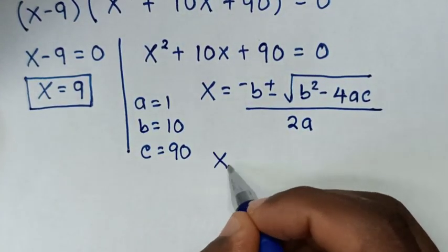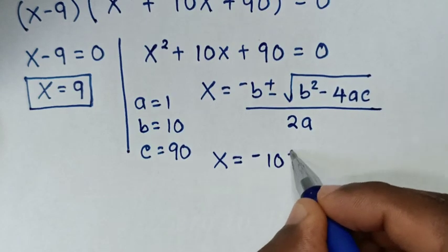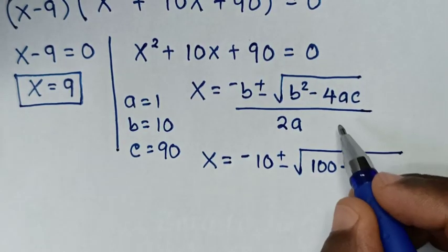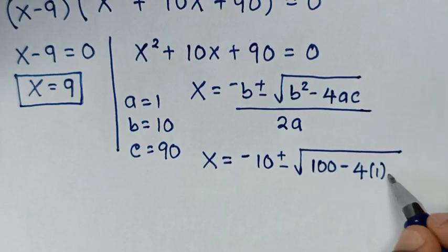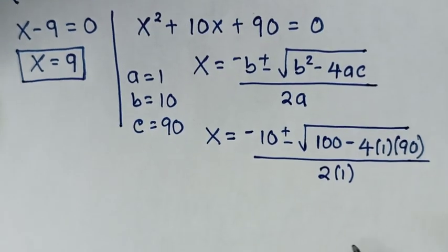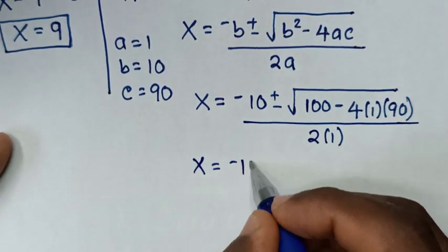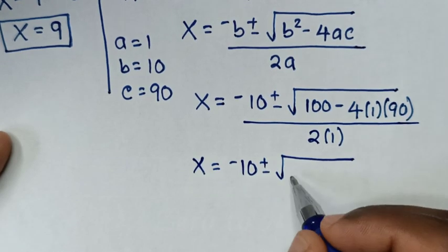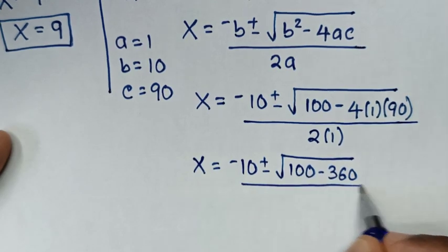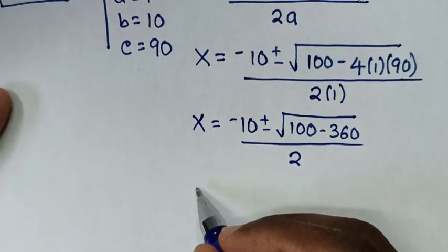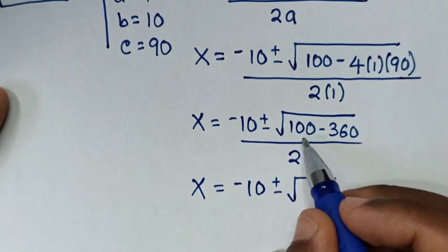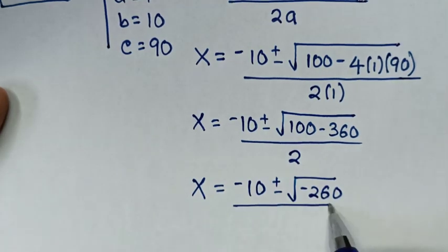Substituting: x = (-10 ± √(10² - 4 × 1 × 90)) / (2 × 1), which gives x = (-10 ± √(100 - 360)) / 2, so x = (-10 ± √(-260)) / 2.